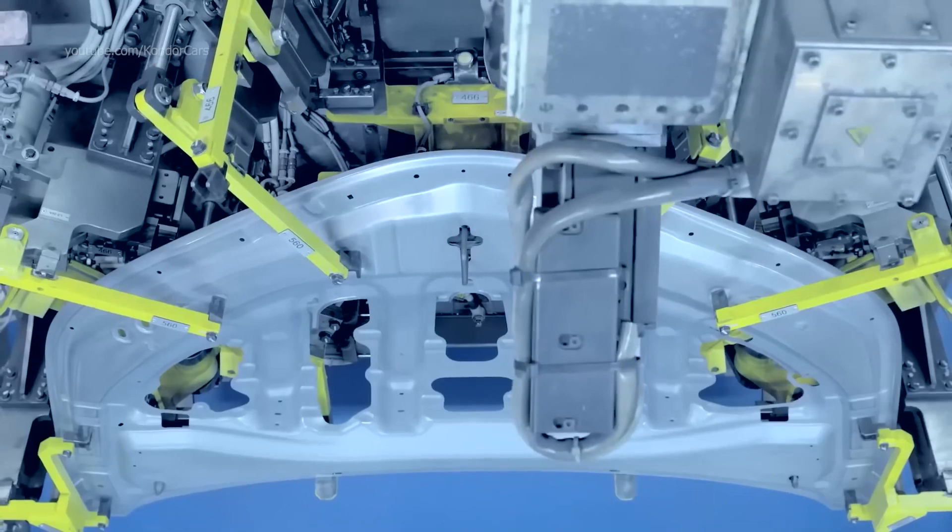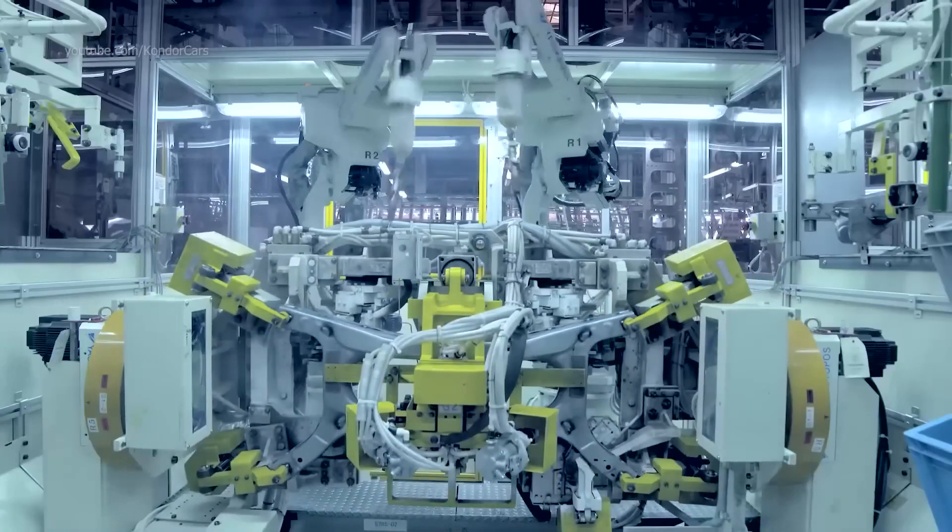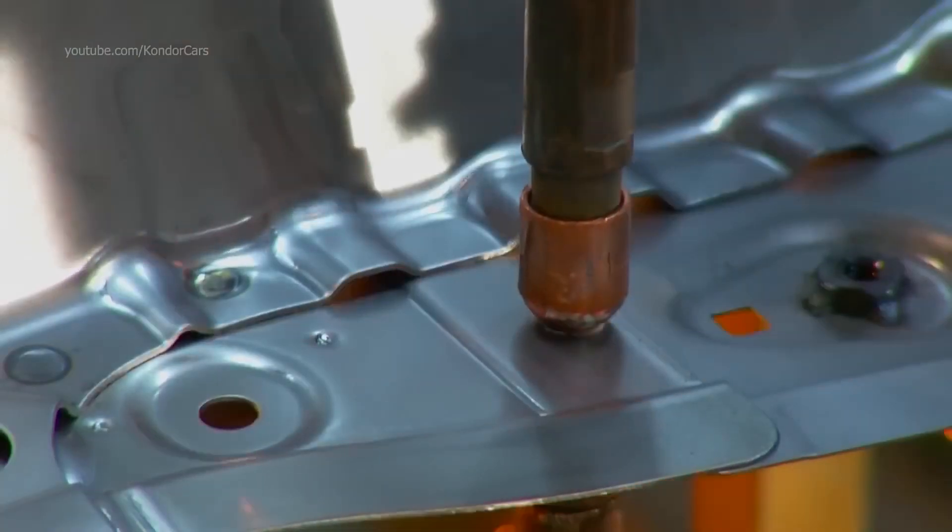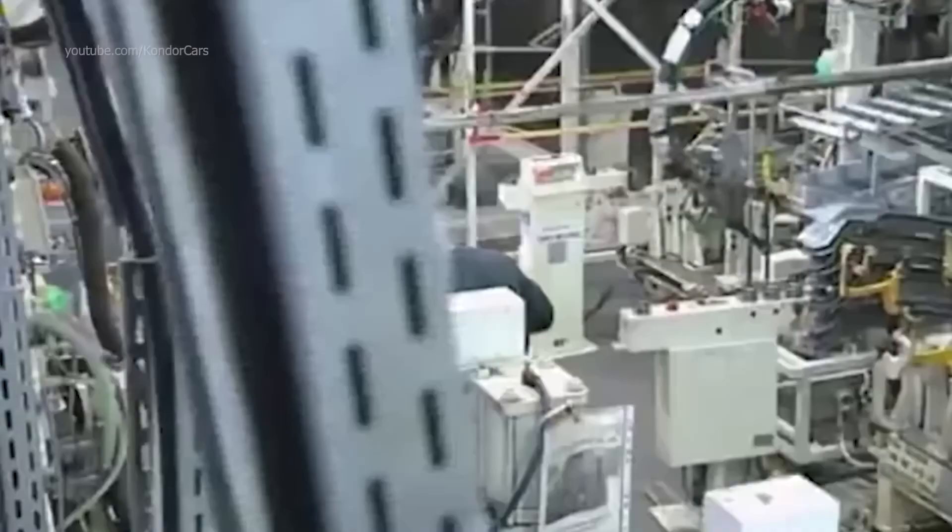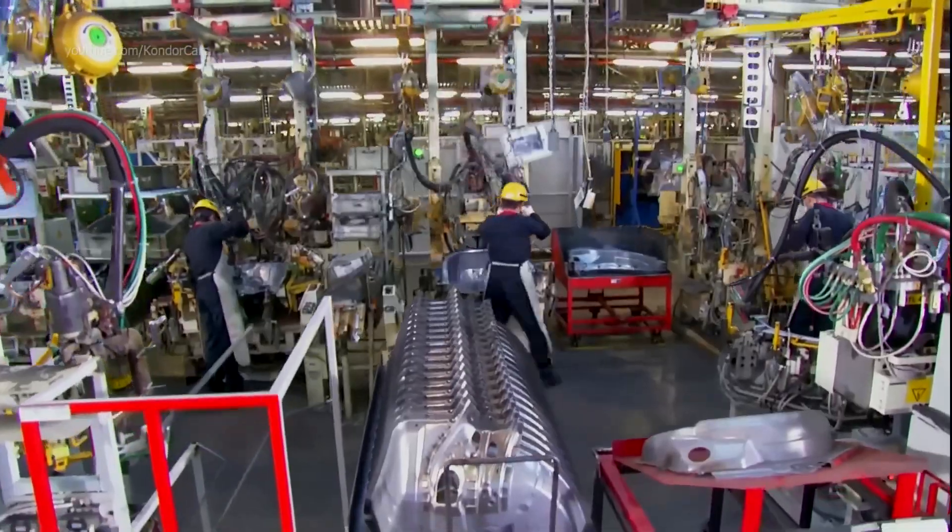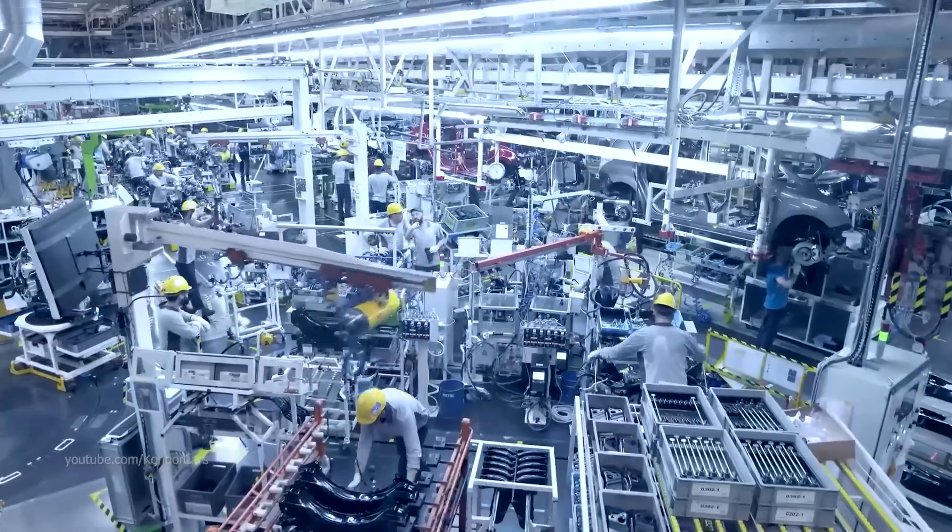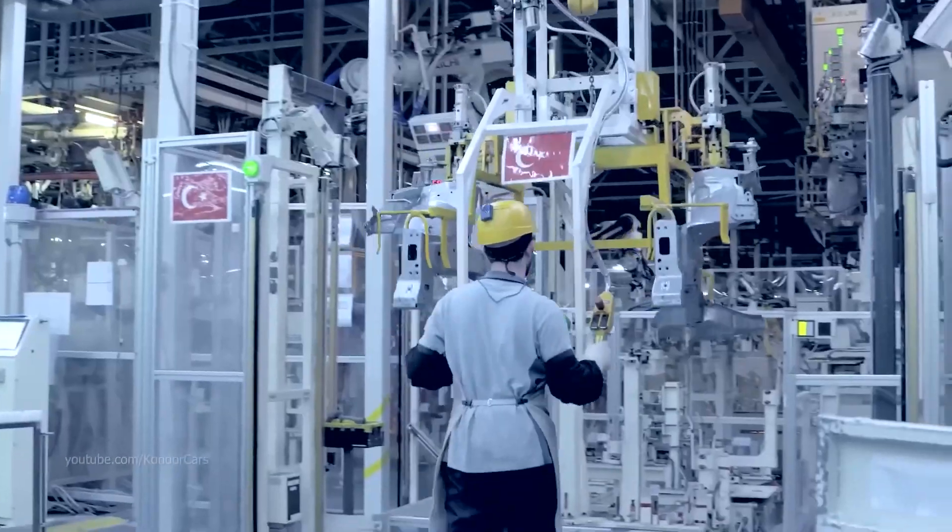Toyota claims that it will use a self-propelling assembly line in place of a conveyor system for future electric vehicle chassis manufacturer. With a substantial portion of the process becoming automated, this method will increase model flexibility at each plant by enabling mass-produced models to move independently from one process to the next.